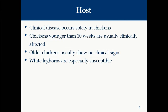Regarding the host, clinical disease is mainly seen in chickens younger than 10 weeks of age. Older chickens will not show any clinical signs, and White Leghorns are especially susceptible for IBD. Birds between 1 to 14 days of age are less sensitive because of maternal antibodies. Other species like turkeys, ducks, fowl, ostriches may be affected by this virus but will not show clinical signs.